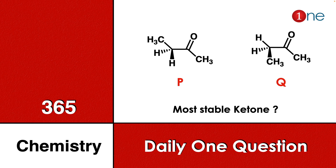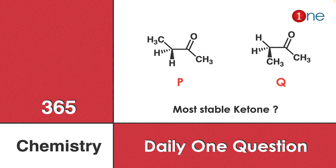Welcome to One Chemistry. This is the 365 Chemistry series — one question daily. Here, two different ketones are given. One ketone has a cis relationship with a methyl group, and another ketone has a syn relationship with the methyl group. Stereochemistry is specified, so you have to find which ketone is more stable — either P or Q.